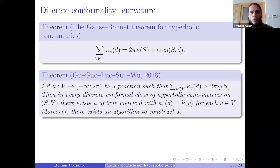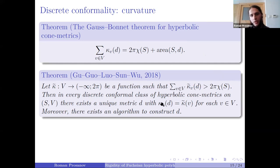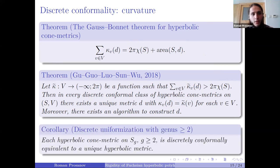In this hyperbolic setting, Gu, Luo, Sun, and Wu also proved a curvature prescription theorem. For hyperbolic con metrics, the following version of the Gauss-Bonnet theorem holds, and they proved that in every discrete conformal class on a pair (surface, marked points), for every function satisfying the required inequality, there exists exactly one metric realizing this function as its curvature — and again this metric can be found algorithmically. As a corollary, this implies discrete uniformization for surfaces of higher genus.